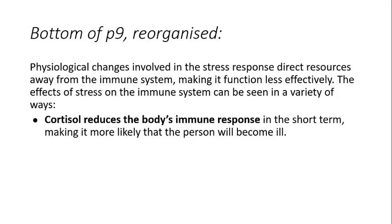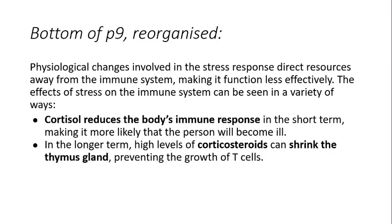The first thing to note is that cortisol — an important hormone released as part of the stress response — reduces the body's immune response straight away, making it more likely that someone will become ill. But in the longer term, constant high levels of cortisol or corticosteroids actually shrink the thymus gland, so T cells can't grow as much. That T cell response is really important in terms of our immune response — it provides that specific, fast response with memory — and the helper cells also affect the B lymphocytes. So that is basically how stress affects our immune system.